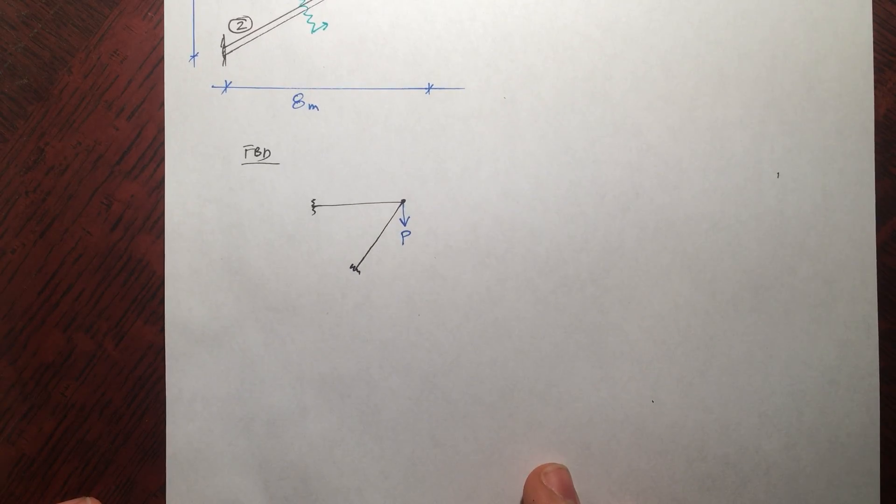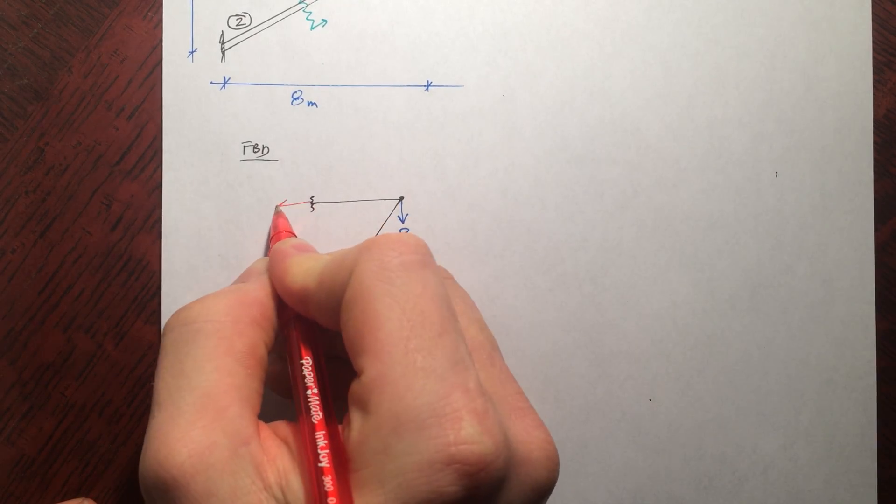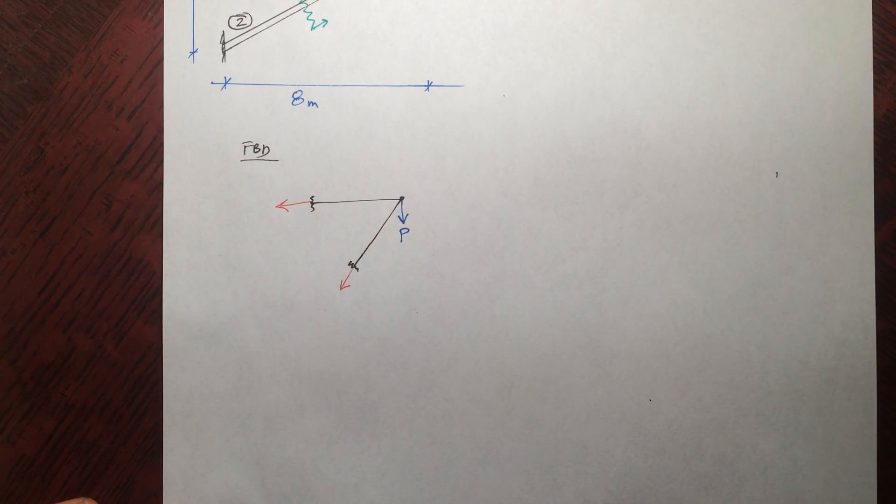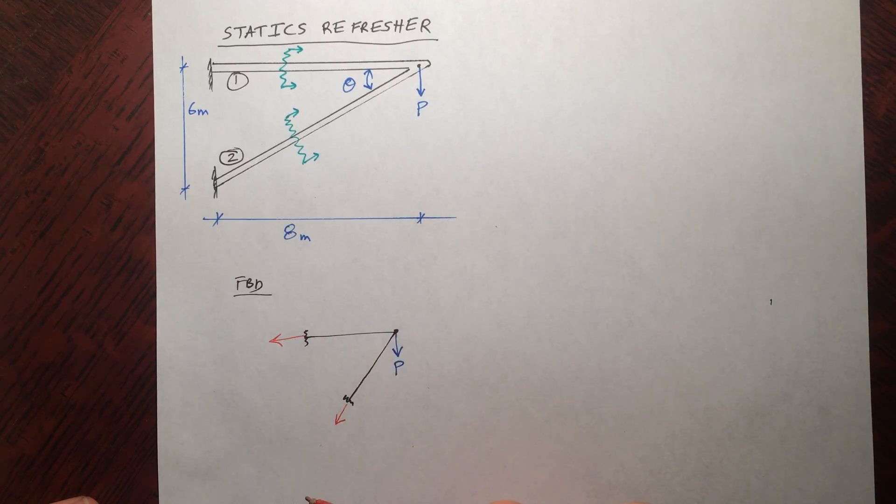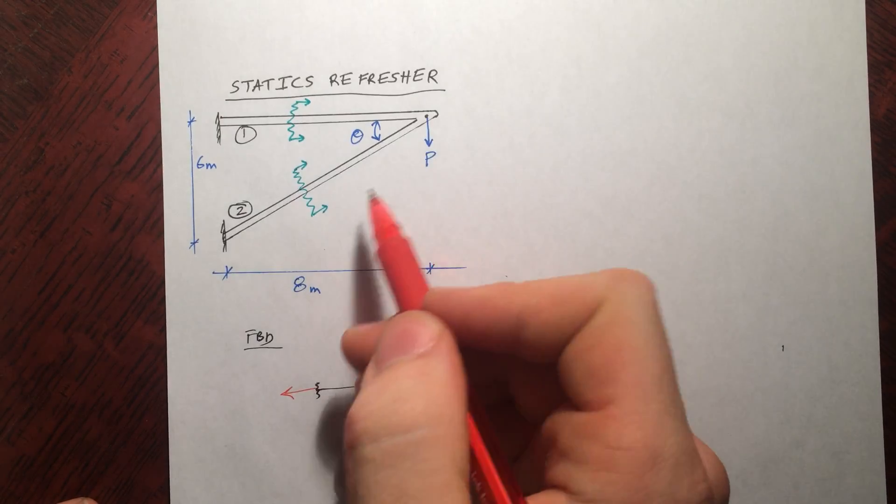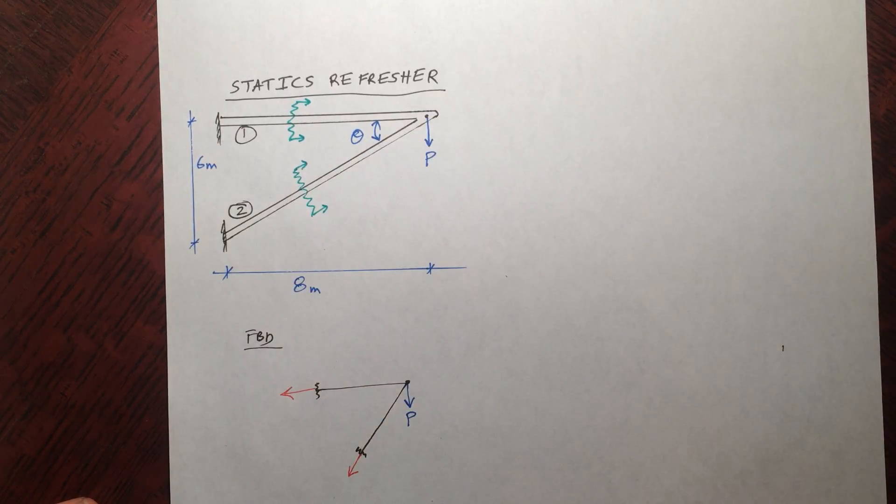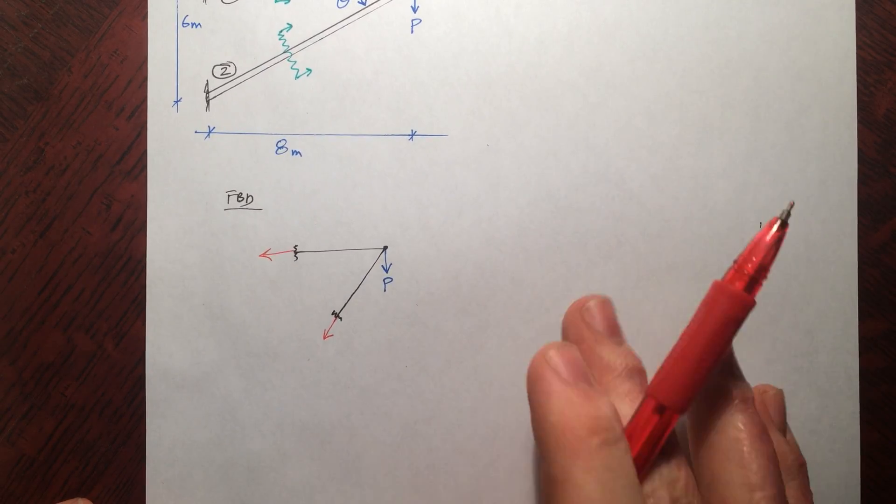So there's going to be some sort of reaction developed to this force here. Now we always draw those reactions pointing away from the bar. Because unless you explicitly know whether this force is going to be in tension or in compression, you can't figure out if they are or not. So like this structure here, you can say, okay, that's compression, that's tension. That's pretty straightforward.